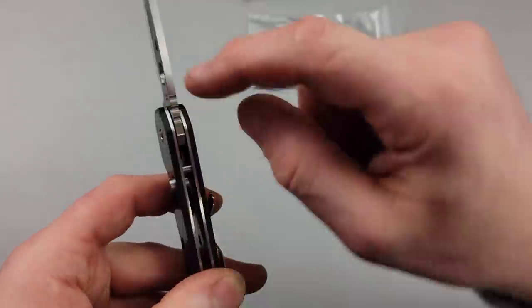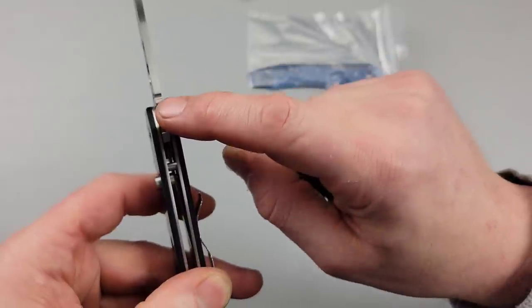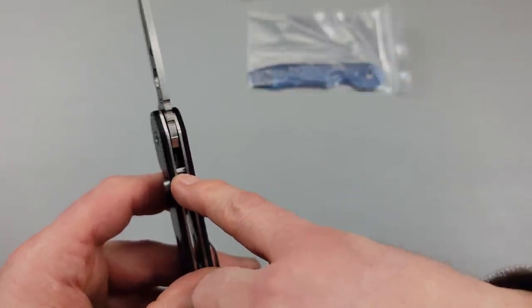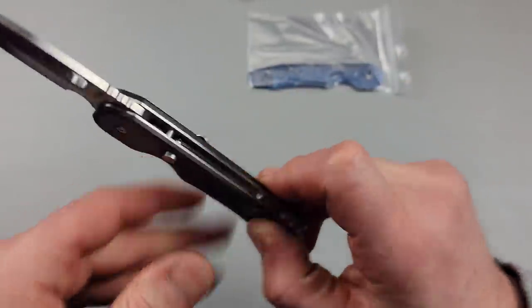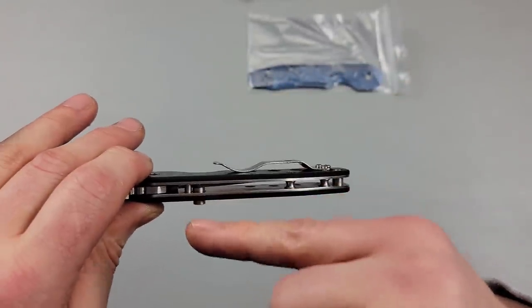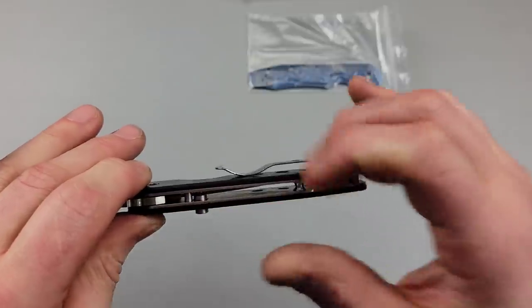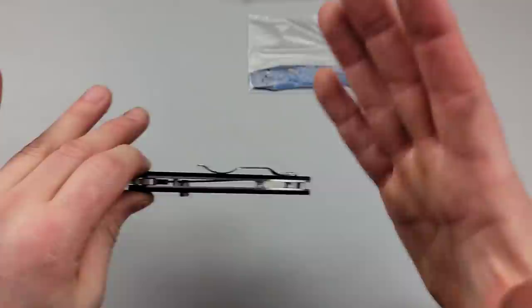It has three points of contact. You have the stop pin, then the liner, right? And the liner hits the back of the, or it hits the tang of the blade and the stop pin. So you have the stop pin, the tang of the blade and the liner all in contact together.